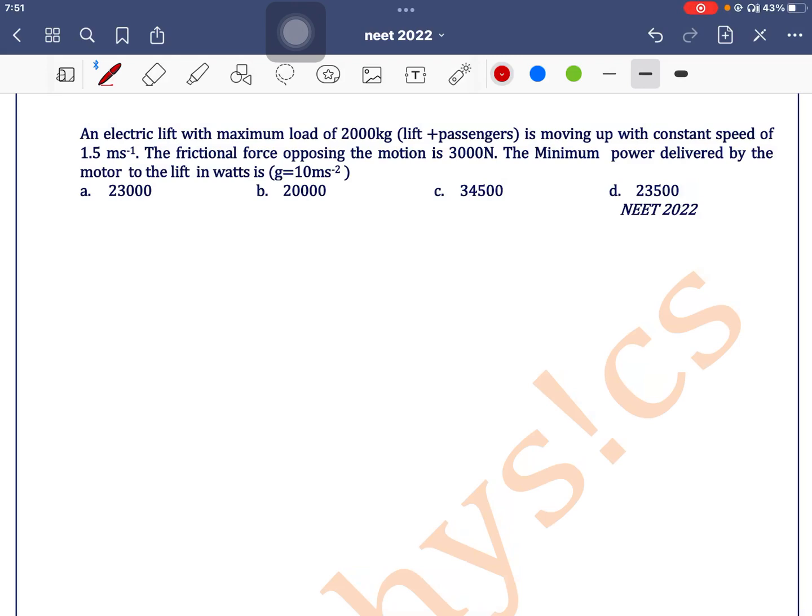An electric lift with maximum load of 2000 kg (lift and passengers) is moving up with a constant speed of 1.5 m/s. The friction force opposing the motion is 3000 Newtons. Find the minimum power delivered by the motor to the lift in watts.